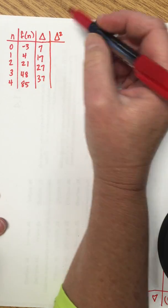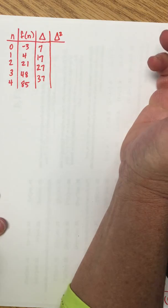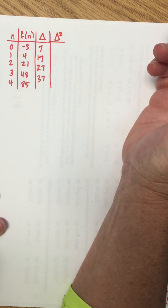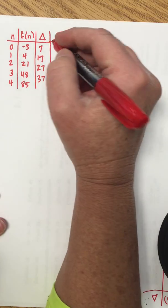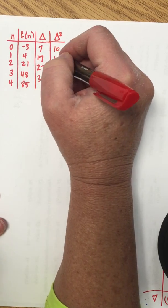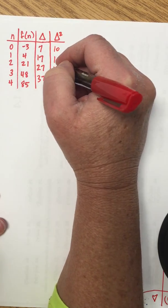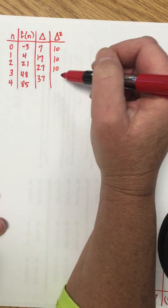We're going to look at the second differences and subtract our first differences the same way we did our original outputs. 17 minus 7 is 10, 27 minus 17 is 10, 37 minus 27 is 10.